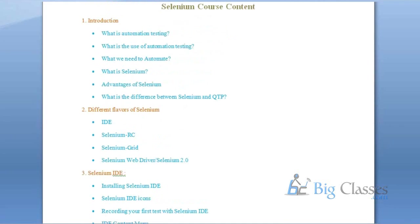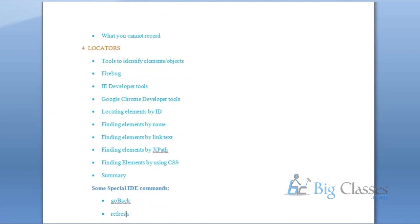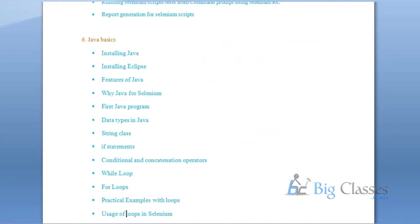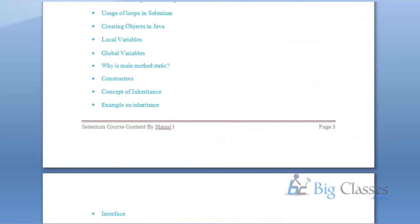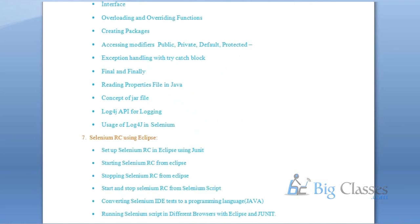In the course, we're going to discuss: what is automation testing, what we need to automate, what are the advantages of Selenium, differences between Selenium flavors, and then Selenium IDE installation. Then Java topics: why Java for Selenium, programs, data types, string class, if statements, loops, and all related topics. I'm covering each and every Java topic that could come up in an interview — you will not get any new question from Java that I haven't discussed here.